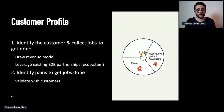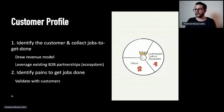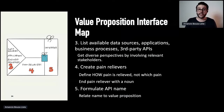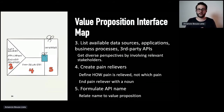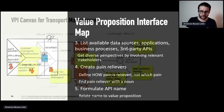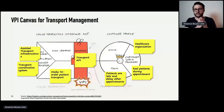You identify the pains needed to get the jobs done, and you really need to validate those assumptions. If you don't validate, it's not really product management — product management is about validating things and mitigating risks, so you know that you're building something customers really want. Then you go to the Value Proposition Interface Map and list all the data sources, applications, business processes, and third-party or internal APIs that you could potentially use to really create value. Then you define the pain relievers.